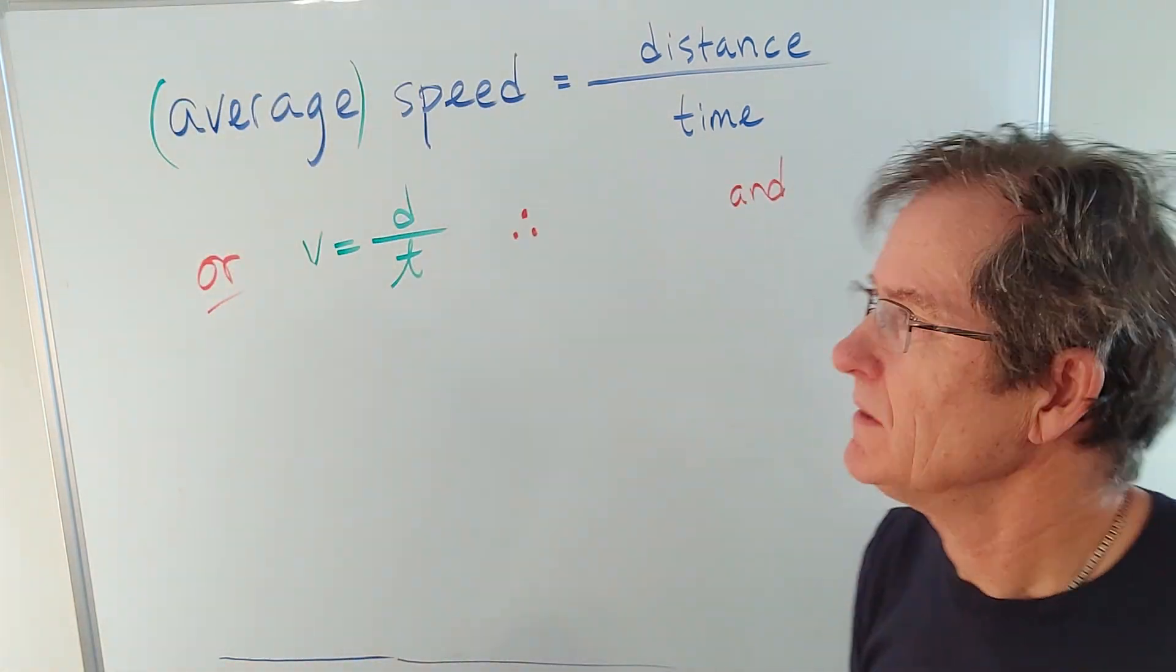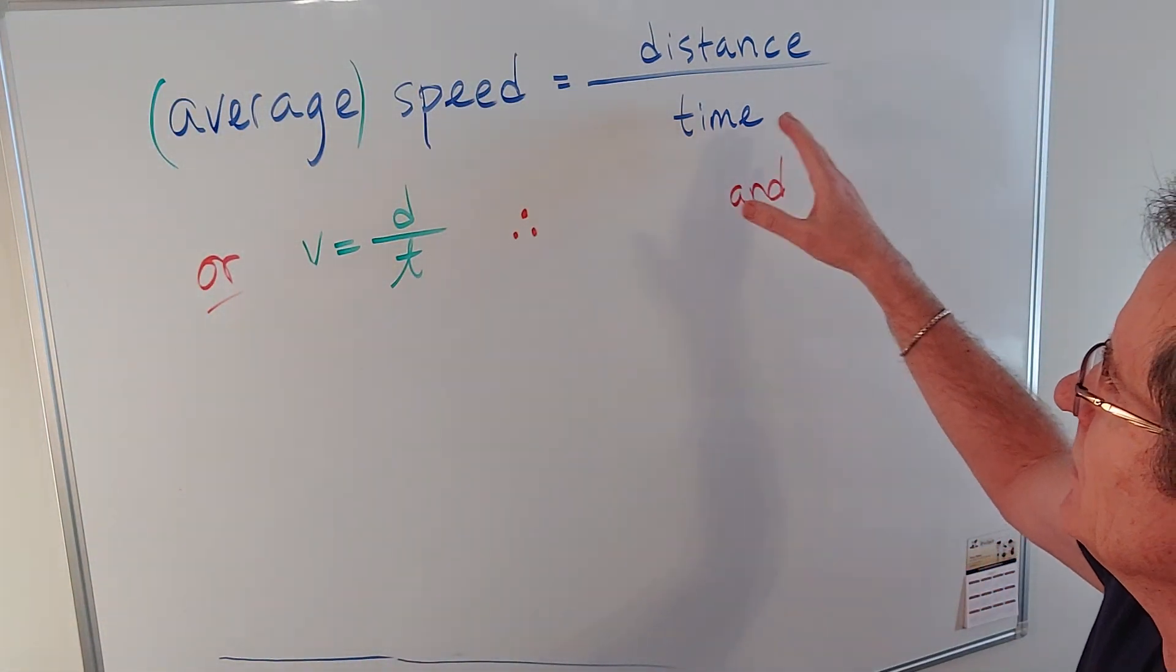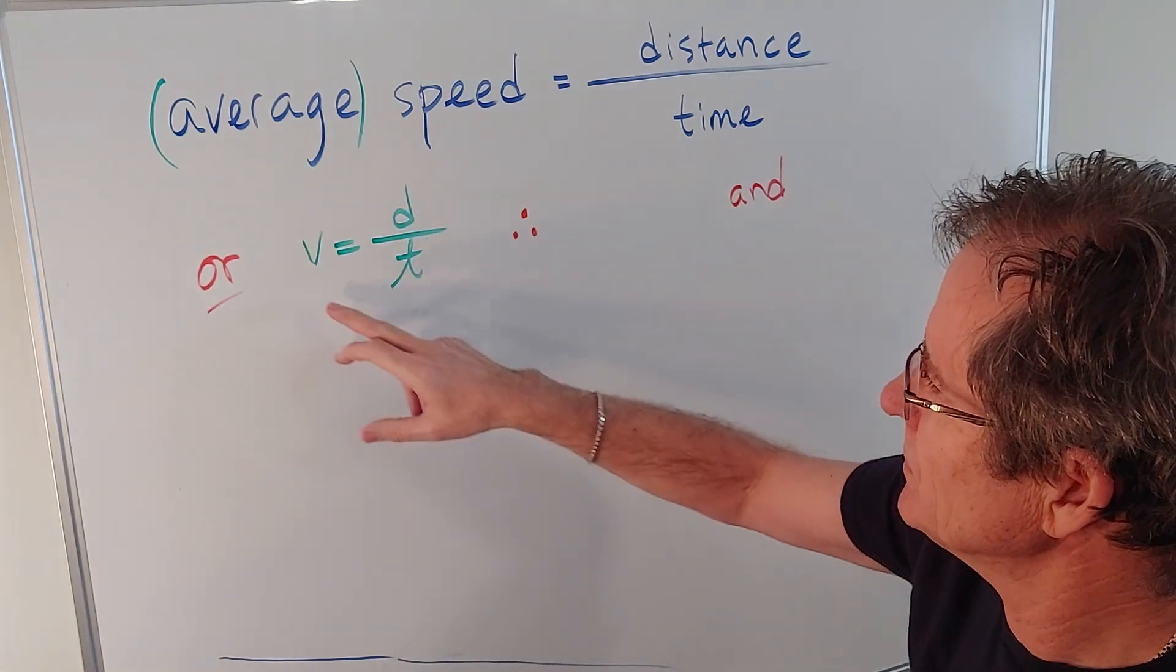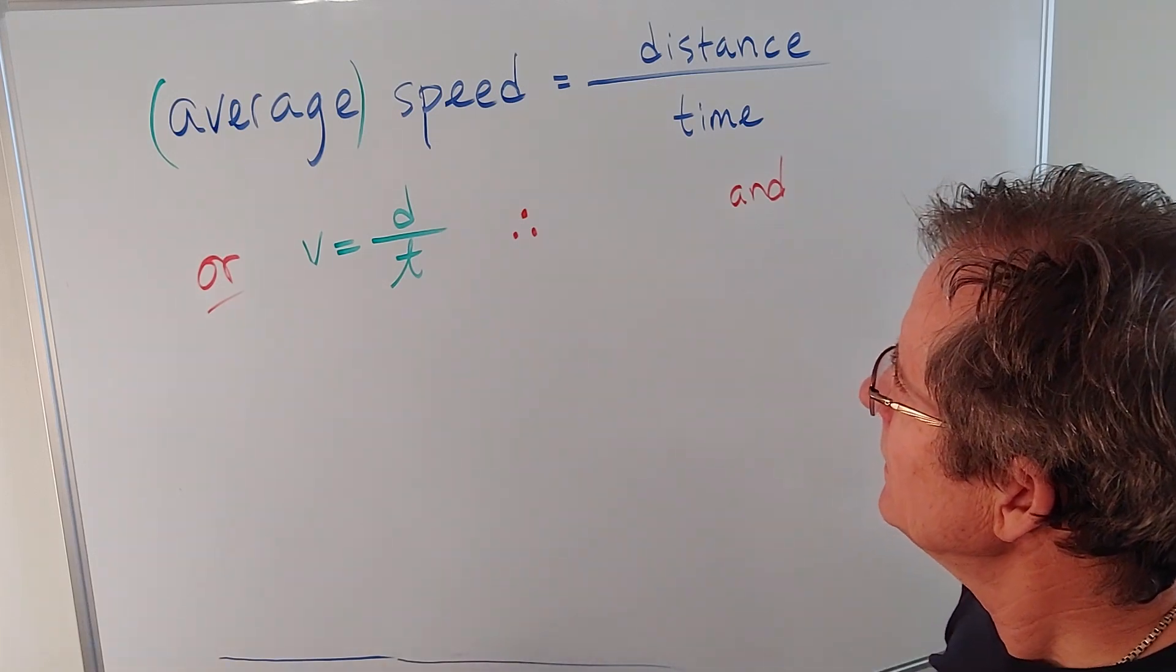Okay, let's talk about, first of all, average speed, or it could just be constant speed. We don't have to have the word average in there. Or using symbols, v equals d over t.